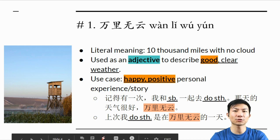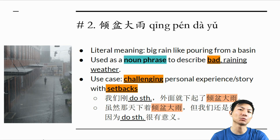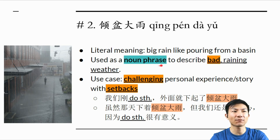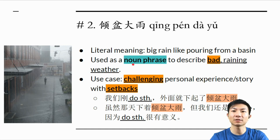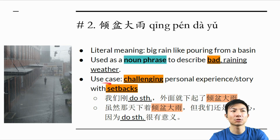What if you want to set up the tone of your story a little bit differently? The second idiom is 轻盆大雨. 轻盆大雨 literally means big rain, like pouring from the basin, and it can be used as a noun phrase to describe bad rainy weather. Because it is a noun phrase, you need to use it together with a verb — you need to put 下 in front of it: 下轻盆大雨.